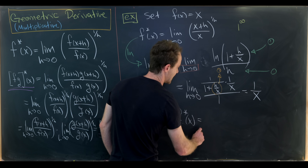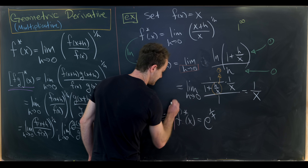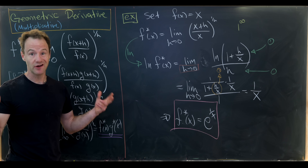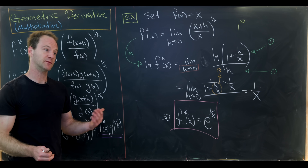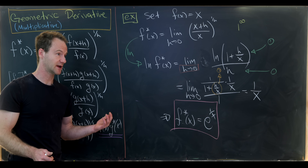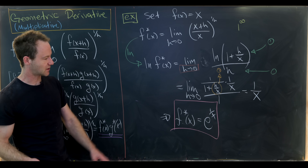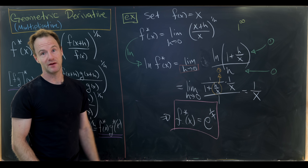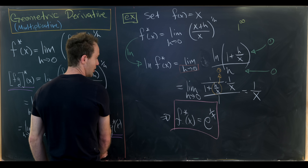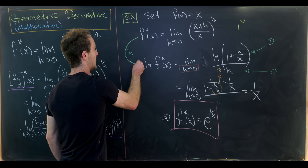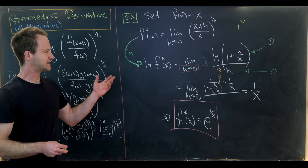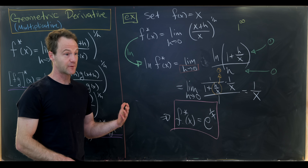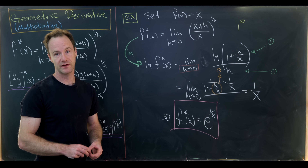That tells us the geometric derivative of the identity function f(x) = x is e^(1/x). Unlike the normal derivative — where the derivative of x is 1 and of x² is 2x, both simpler functions — the geometric derivative of f(x) = x is quite a bit more complicated. Next, I'd like to hone in on that natural log step and derive a closed form for the geometric derivative in terms of the normal derivative.